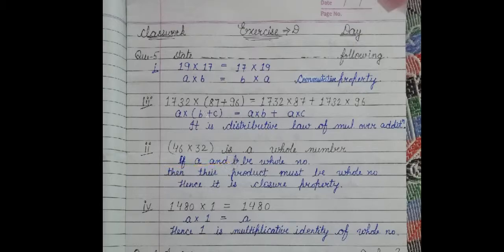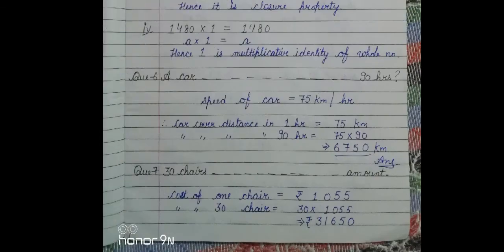Now, 14 multiply 32 is a whole number. This is the property of closure property. Because A belongs to whole number and B belongs to whole number, so their product also belongs to whole number. So, this is called closure property. Here we have, if we have A multiply 1 is equal to A. Here, 1 is the multiplicative identity of the whole number. If you have any number like five, five multiply by one will give you five. So, one is called the multiplicative identity.